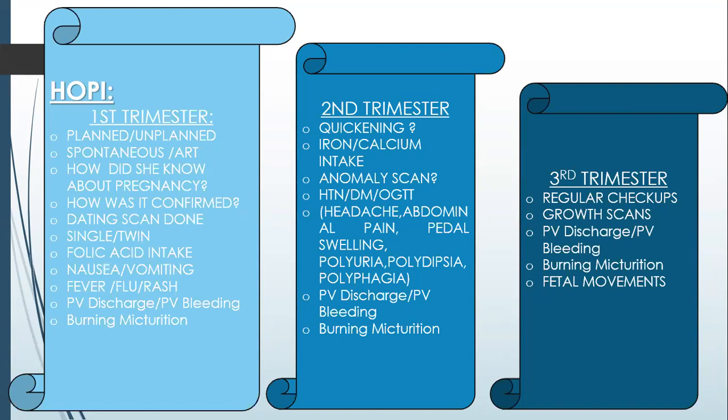In the first trimester, ask the patient whether the pregnancy was planned or unplanned, whether it was a spontaneous pregnancy or whether she used any assisted reproductive technique or ovulation induction, how she knew about the pregnancy, any symptoms or urine pregnancy test done, how the pregnancy was confirmed — whether it was a urine pregnancy test, a blood beta-HCG test, or any ultrasound done. Then ask whether she has done a dating scan, and whether the pregnancy was singleton or twin gestation. Inquire about supplement intake, including whether she has taken folic acid.